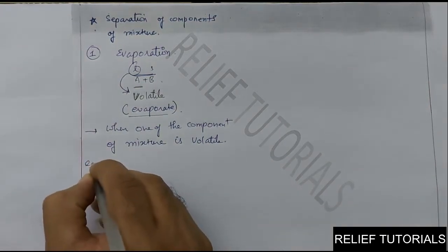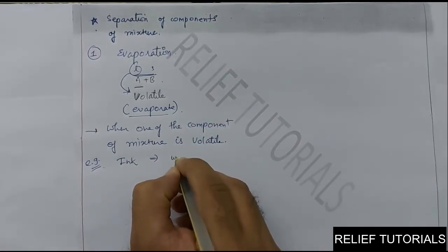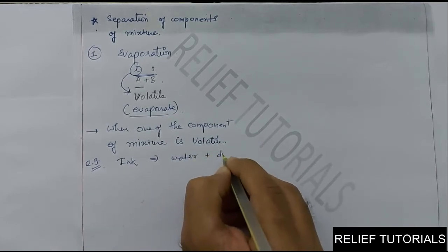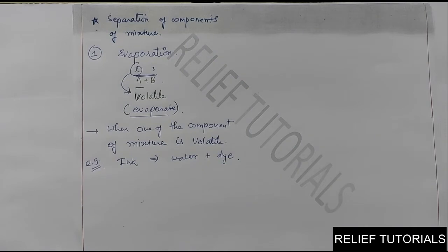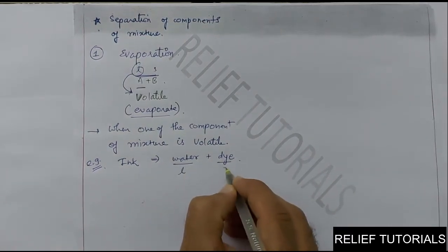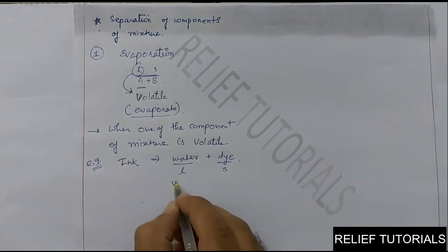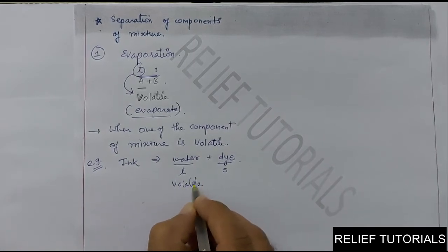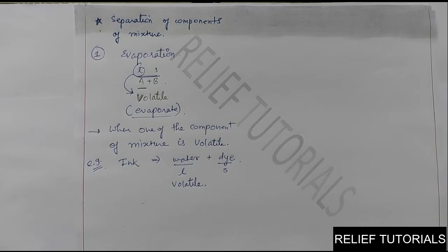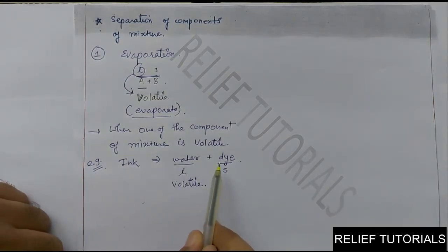Let us take one example from your textbook. Consider ink. Ink is a mixture of water plus a colored component called dye. So the mixture of water and dye is called ink. Water is a liquid-state substance; dye is a solid-state substance dissolved in water. So water is volatile, and this can be separated using the evaporation method. How can we separate water from ink?